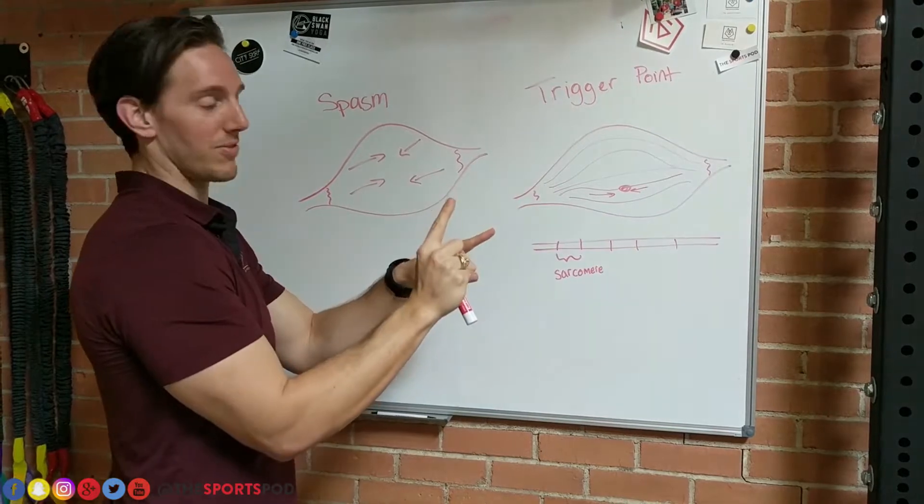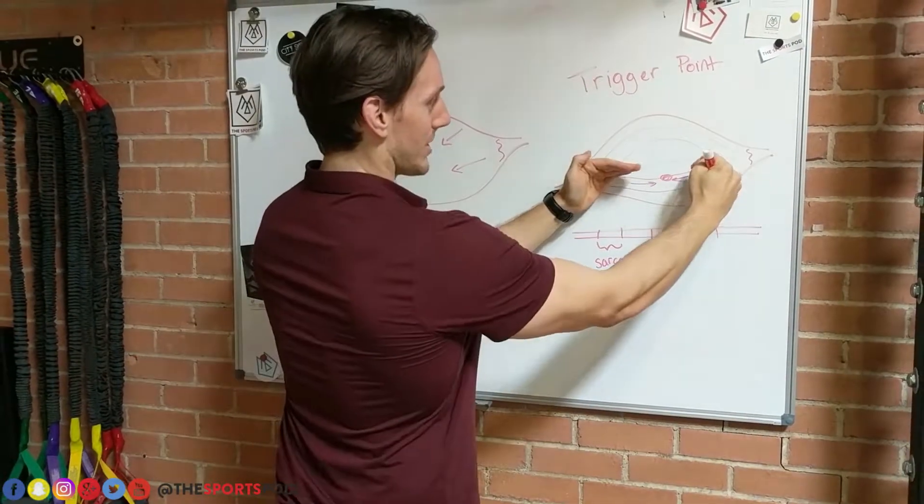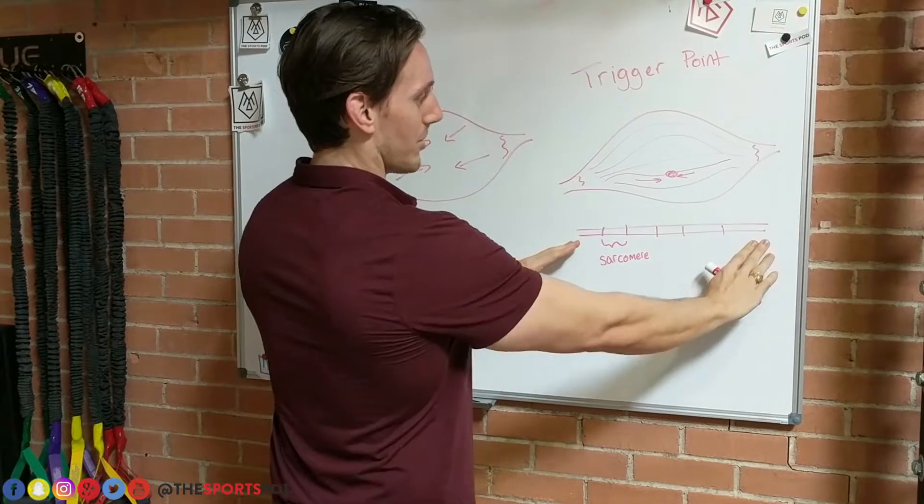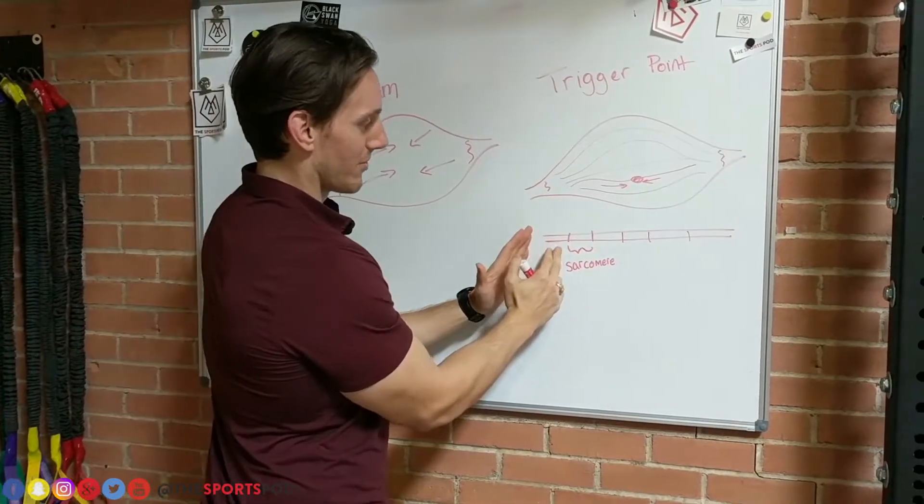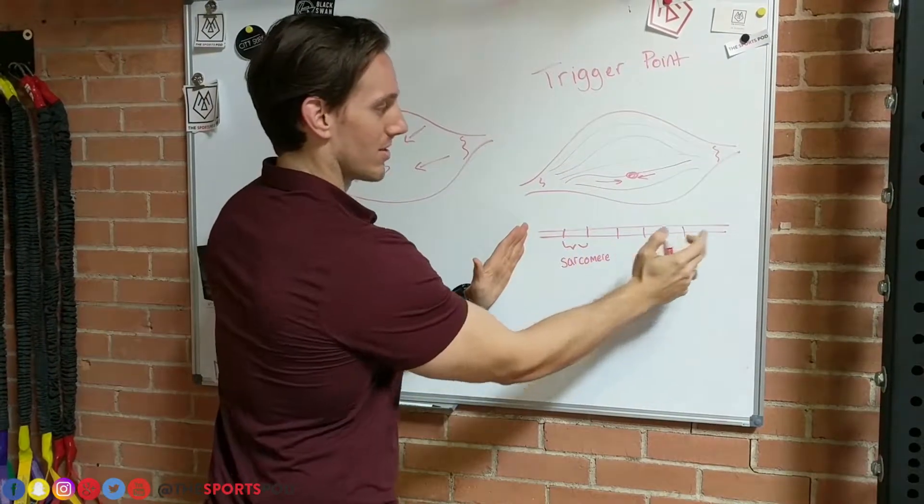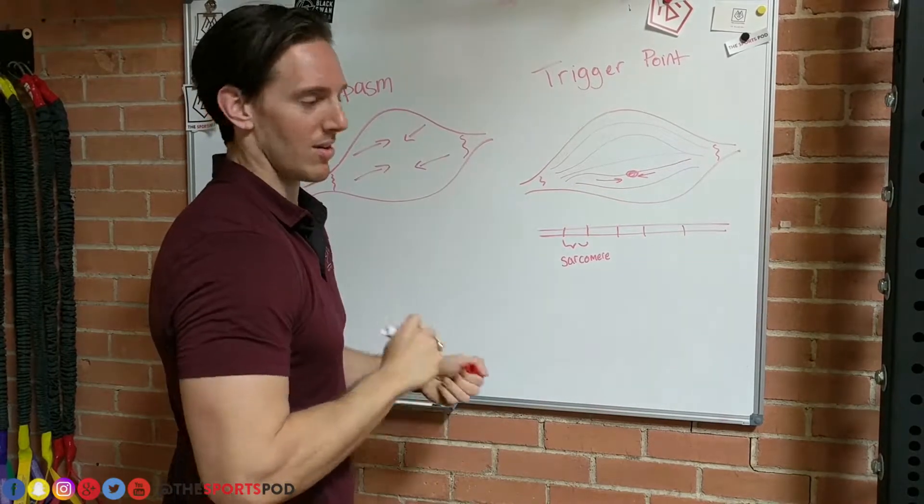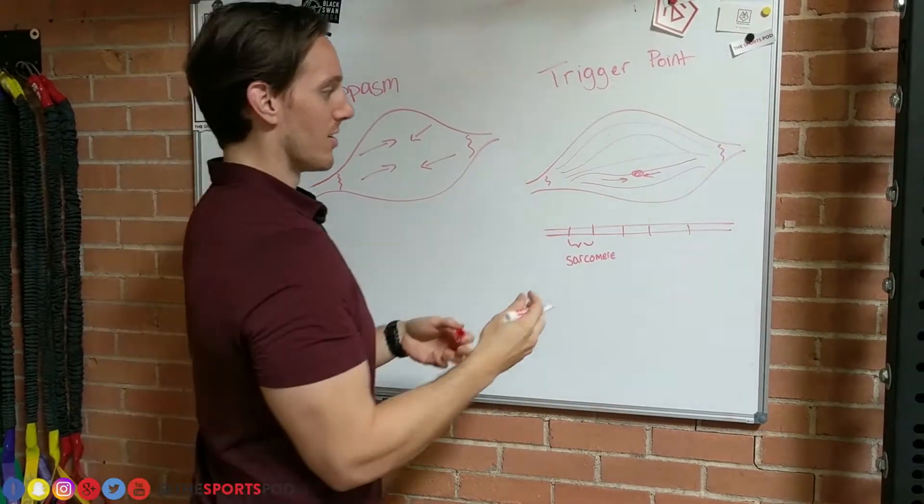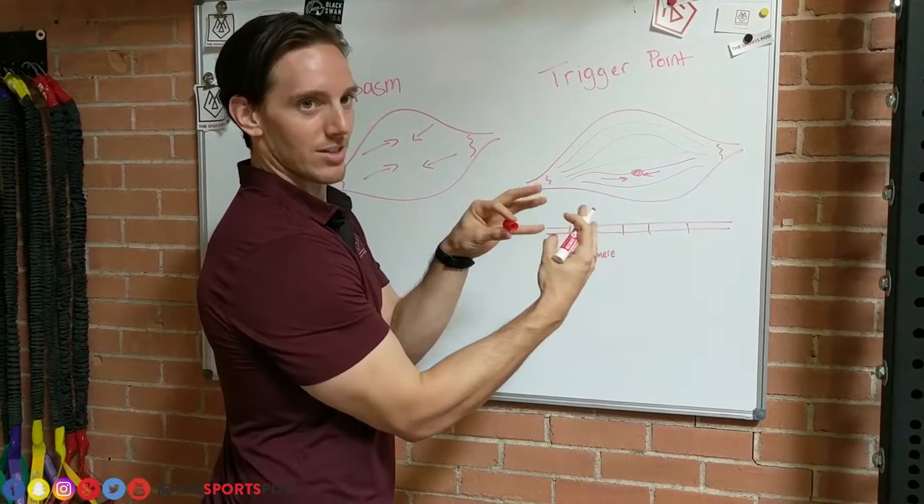So it's just one muscle fiber. Let's say we dissected that out and we have our one muscle fiber here. It's made of a bunch of different segments. These are called sarcomeres. When you look at an individual sarcomere, these things usually contract and relax.